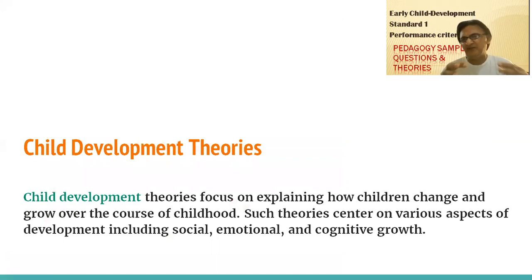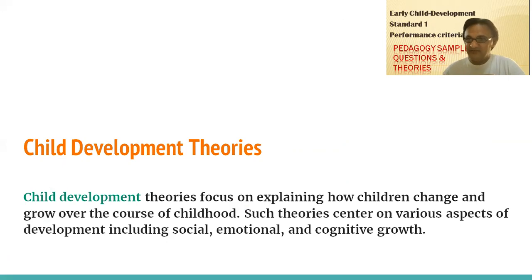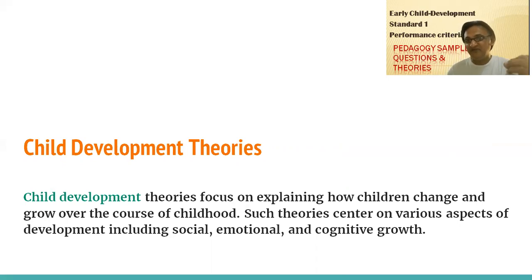Why do we call these the child development theories? Child development theories focus on explaining how children change — from one stage to another. From newborn to three months, six months, eight months, twelve months, preschool, and school age through to around fourteen years of age. Each theory individually explains the impact, interaction, different reactions, and characteristics of children. These theories have been proved by different psychologists. They center on various aspects of development including social, emotional, and cognitive growth.